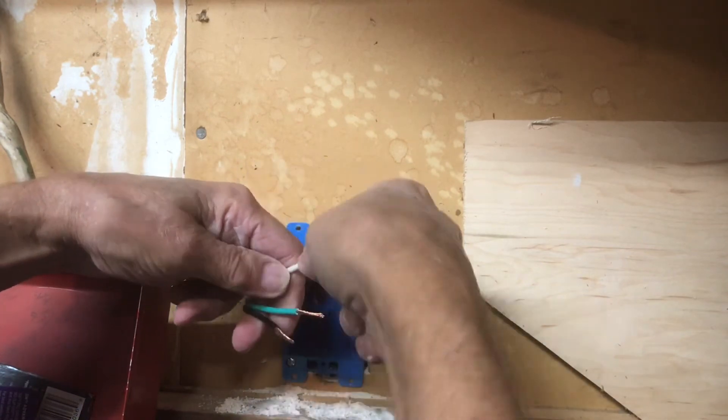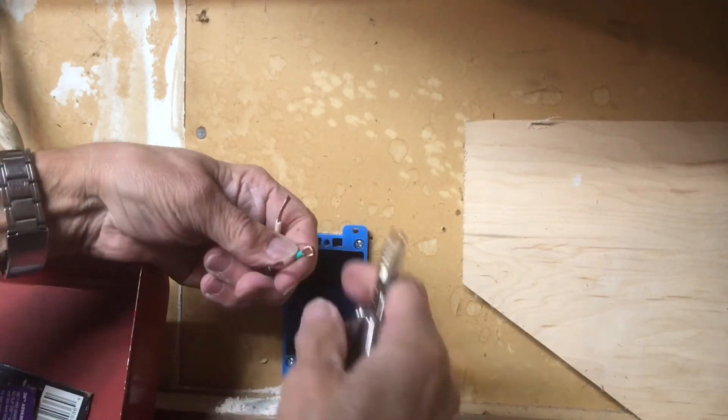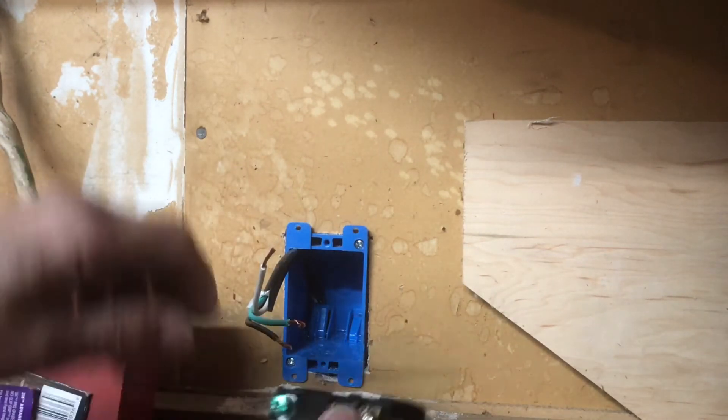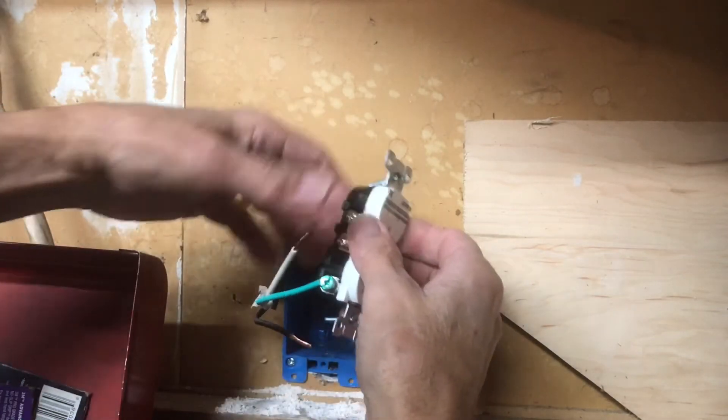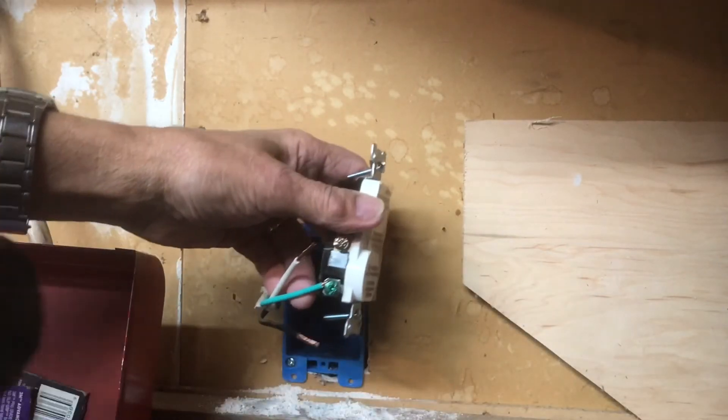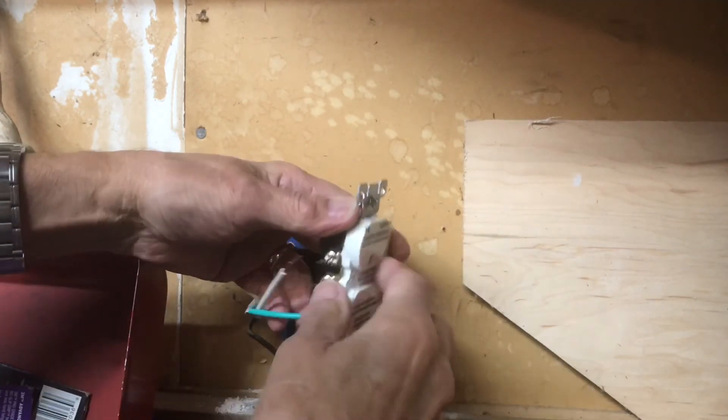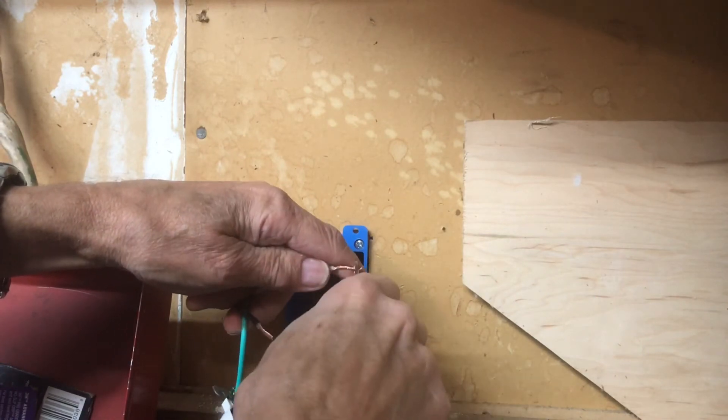So we're twisting these in the direction that they're wound, so it's clockwise. Then I'll take my little electrician's tool and I'll curl it around there so it goes on the ground wire in the direction the screw goes. That way it pulls the wire in instead of pulling it out.